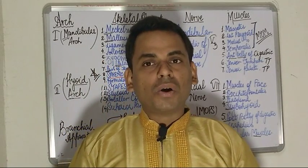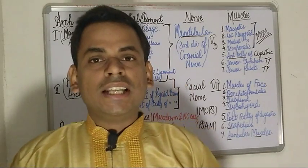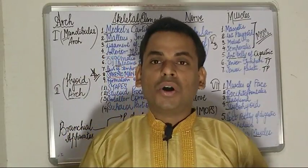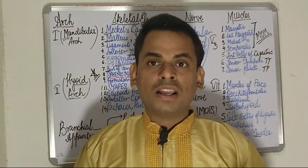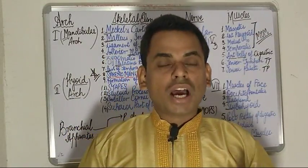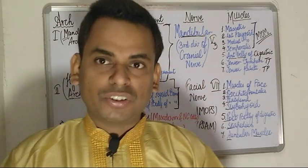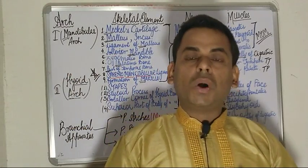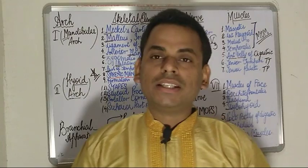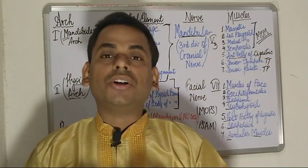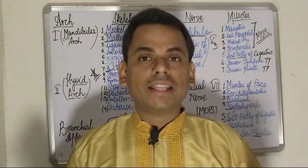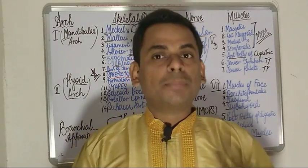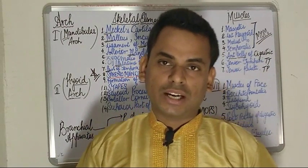The branchial or pharyngeal arches are the rod-like thickenings of the mesoderm which are present in the wall of the foregut.